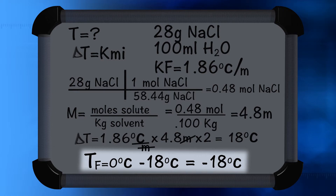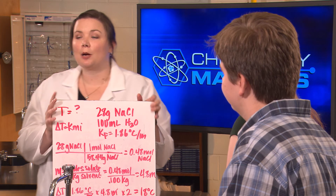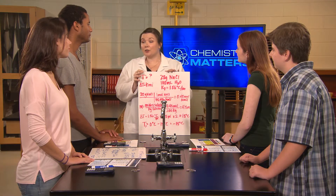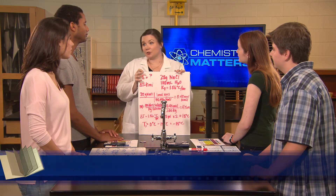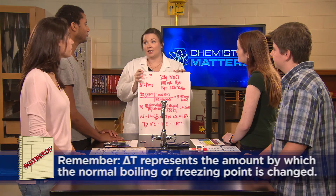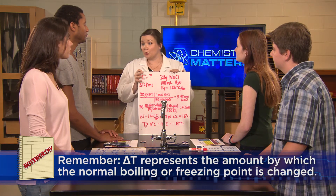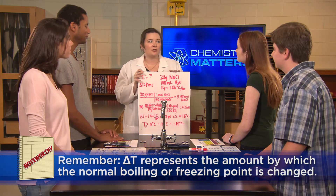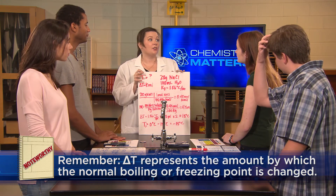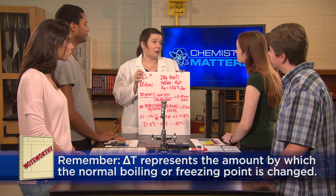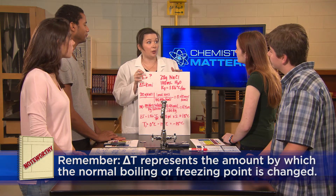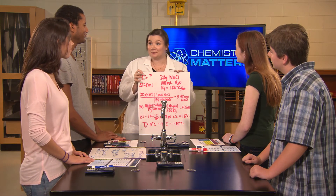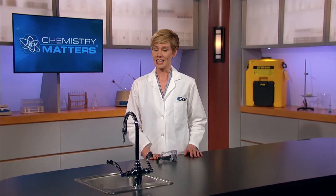Great work, everyone. Sometimes these colligative property calculations are tricky. Remember, when you calculate your delta T, that's not your new temperature — it's just the amount by which the normal boiling or freezing point is changed. So you still have to subtract or add the number you calculate for delta T from the freezing or boiling point of the solvent alone.